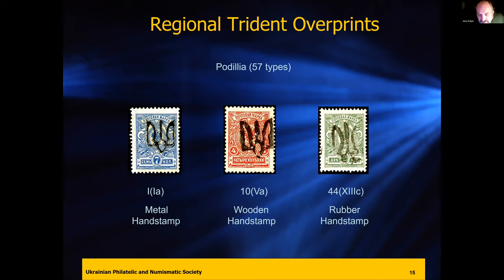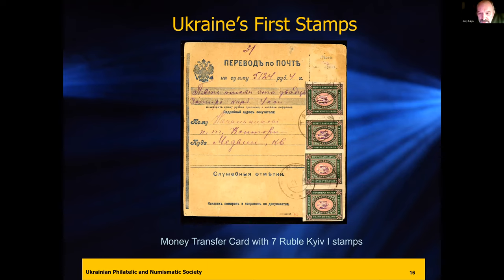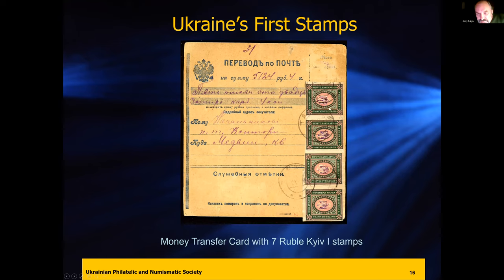There are a lot of forgeries — our tridents were forged extensively over the years. A lot of them seem to be coming out of Poland on eBay. The best way to tell what a real trident overprint looks like is by the money transfer cards, which were issued at the post office — so you know these are legitimate. These transfer cards are not inexpensive, but they are good reference material to compare against when assessing overprints.